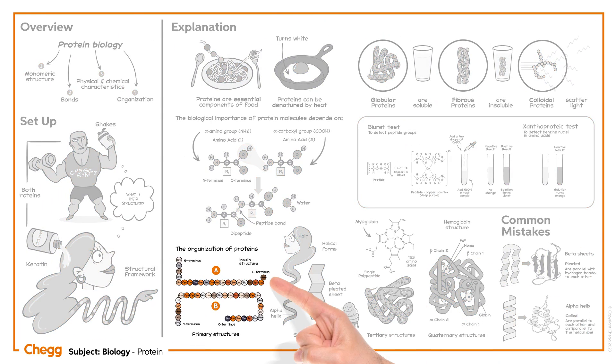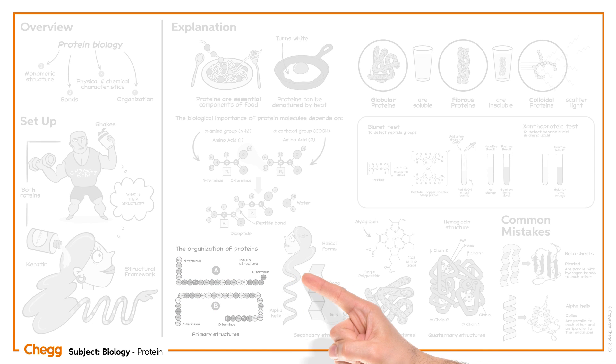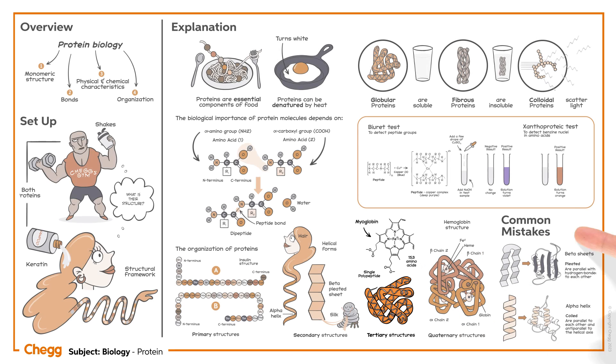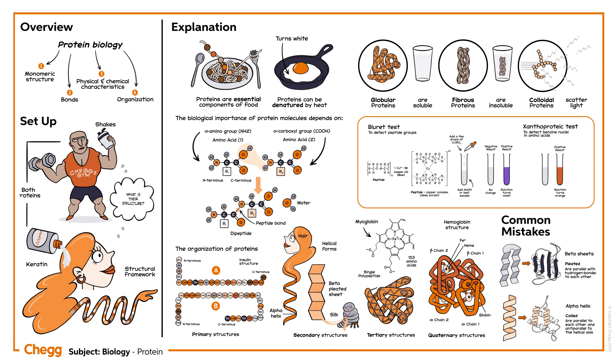To sum up what we have discussed so far, the proteins we consume or see around us vary from a simple structure, like that of insulin, to a complex tertiary structure like that of myoglobin. The complexity of the proteins depends on the functions that proteins are intended to perform.